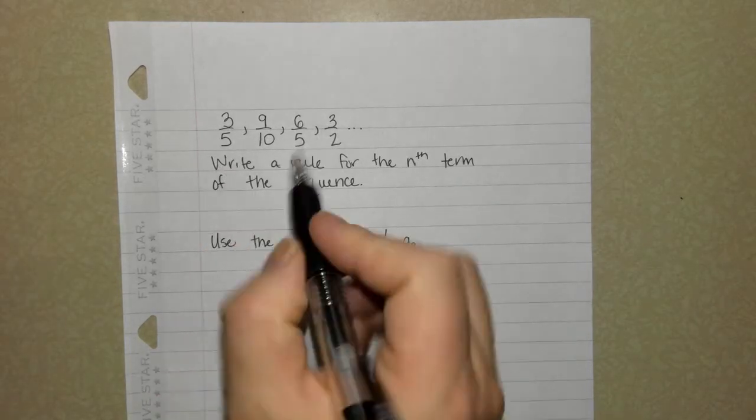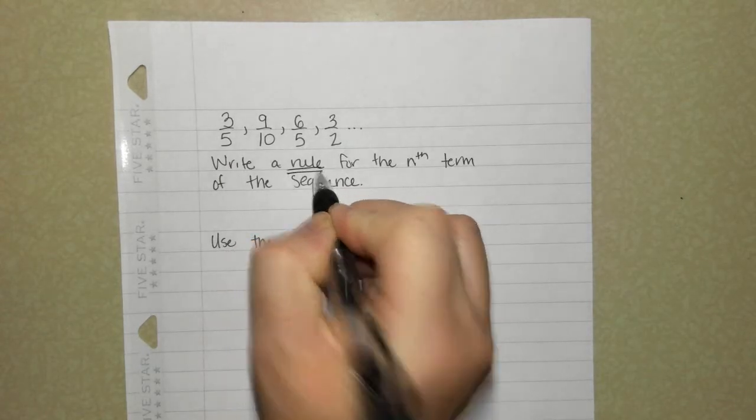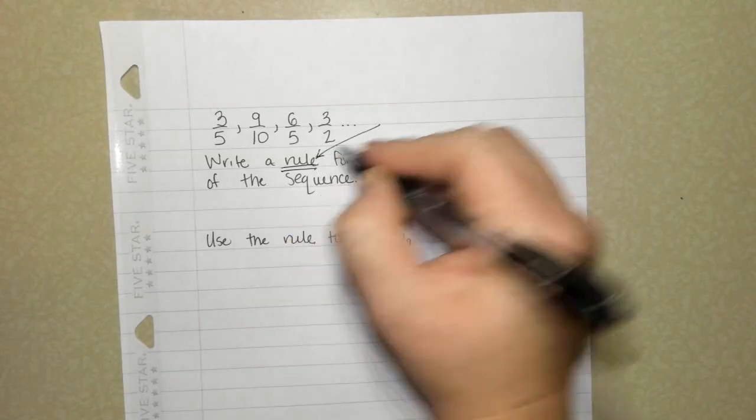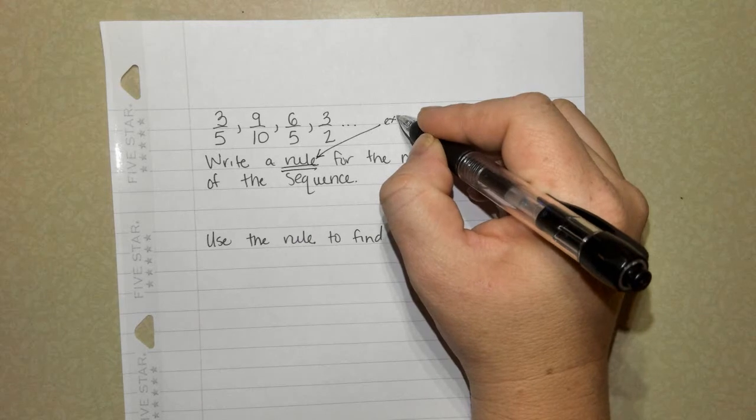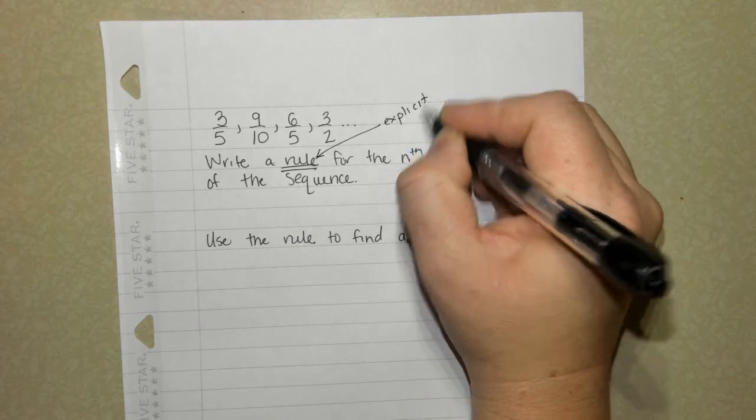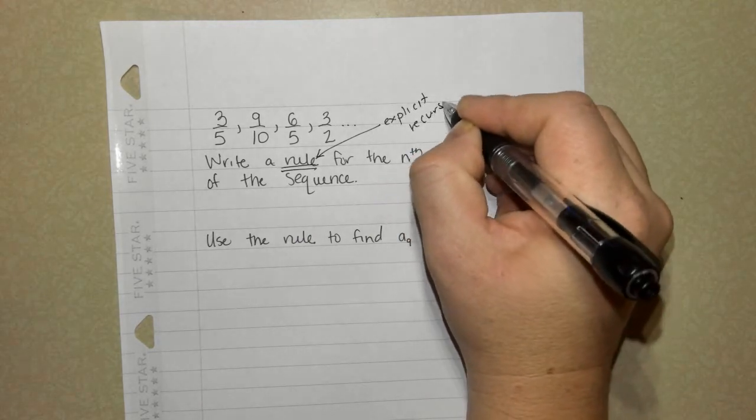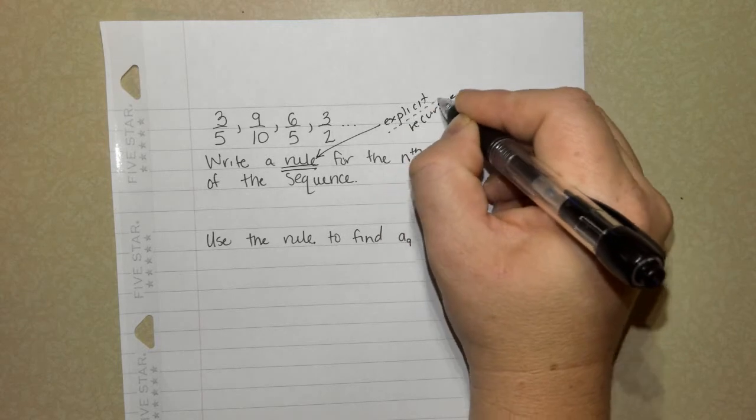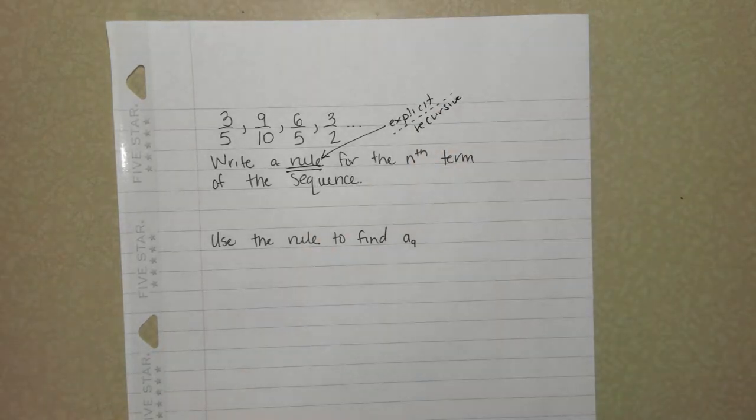To solve this problem, it says write a rule. Can everybody underline the word rule? Rule means a formula. You can write the explicit or write recursive, but I've already stated that explicit is user-friendly. Explicit is the easiest way.